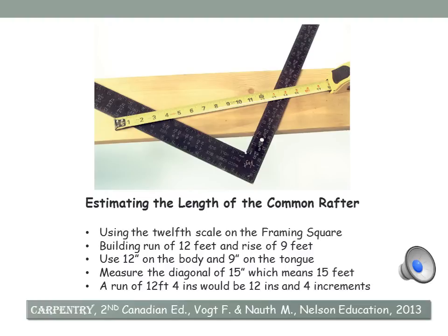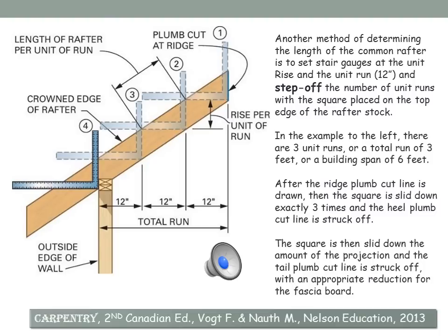Then we can use our tape measure to measure the diagonal across. In this case, it's exactly 15 inches, which means 15 feet. If we were going to use a run of 12 foot 4 inches, we would simply hold the tip of our tape at 12 inches plus 4 spaces, and on the right-hand side at the appropriate rise depending on the slope of the roof. That will give us an estimate for the length of the common rafter. Without doing a lot of math, you can actually determine the length of a common rafter fairly exactly.